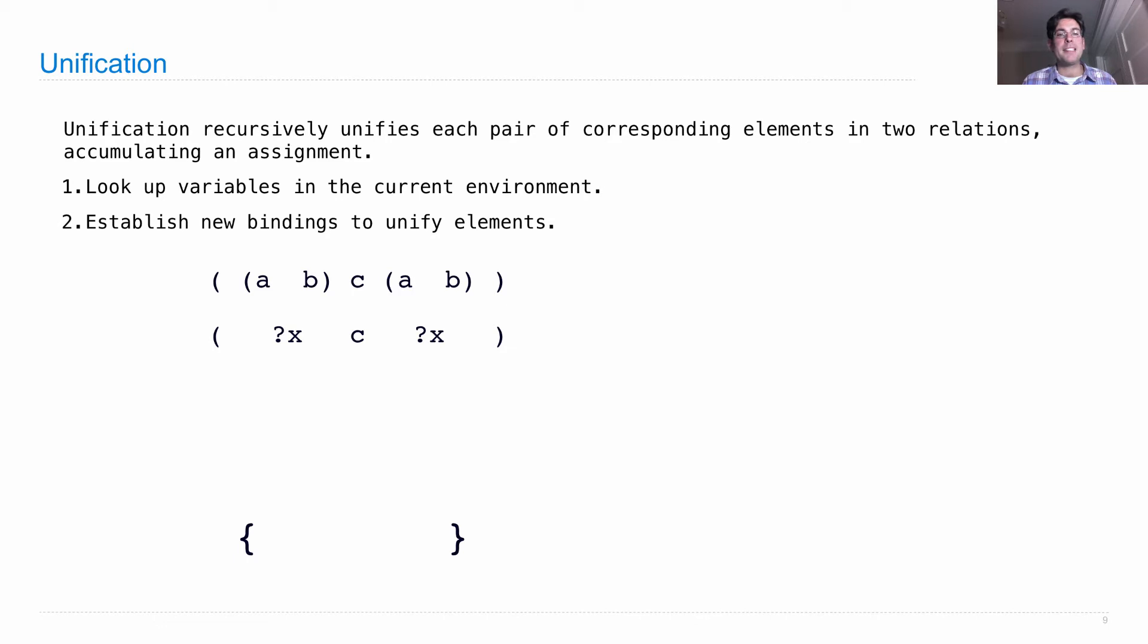So let's look at this example that we saw earlier. It's going to recursively unify each pair of corresponding elements. So in order to unify the whole thing, it will look first at this versus this, and then c, c, and then a, b, x again.